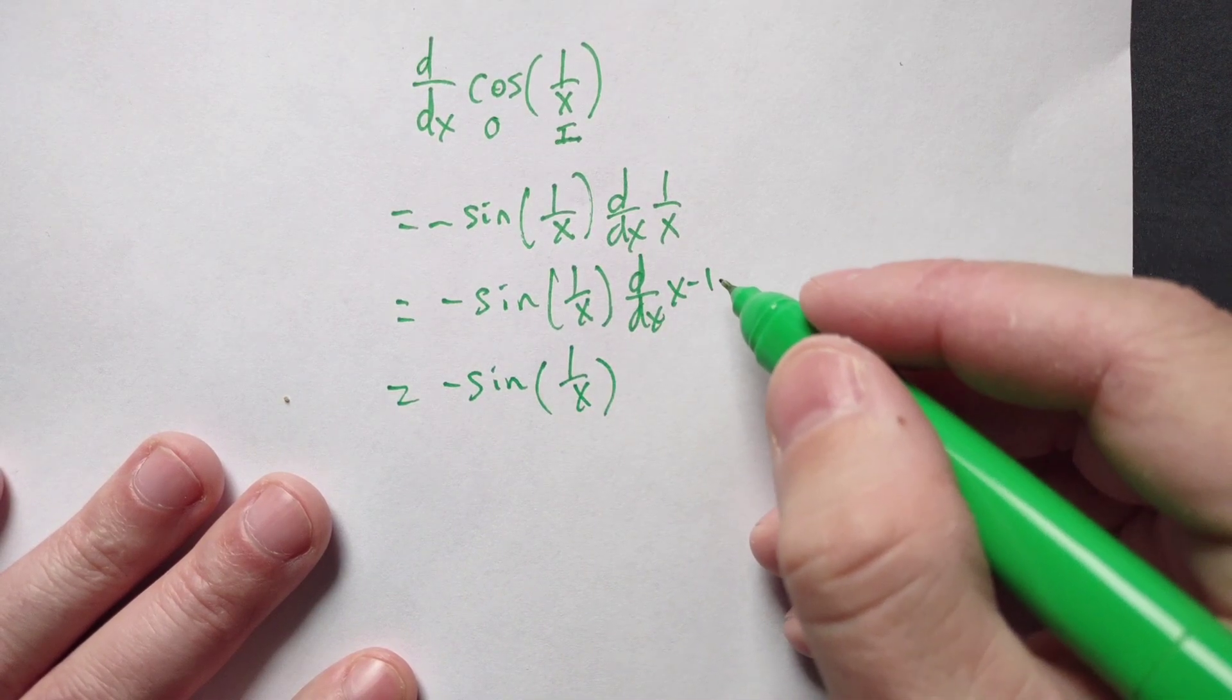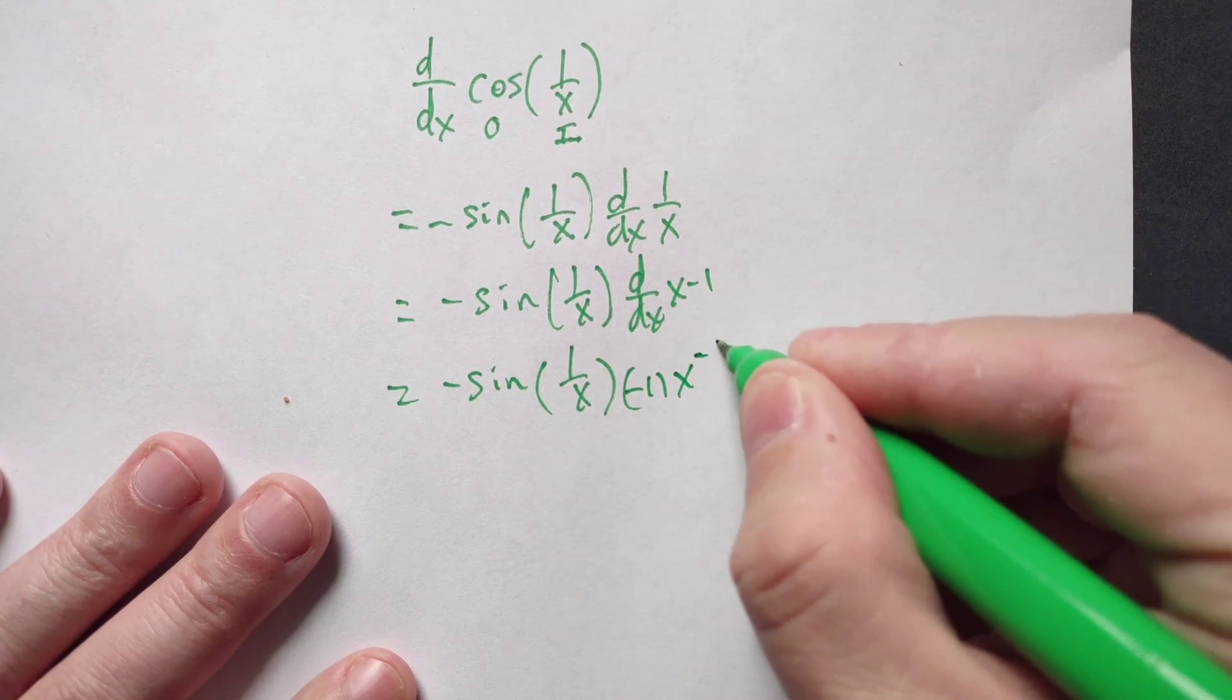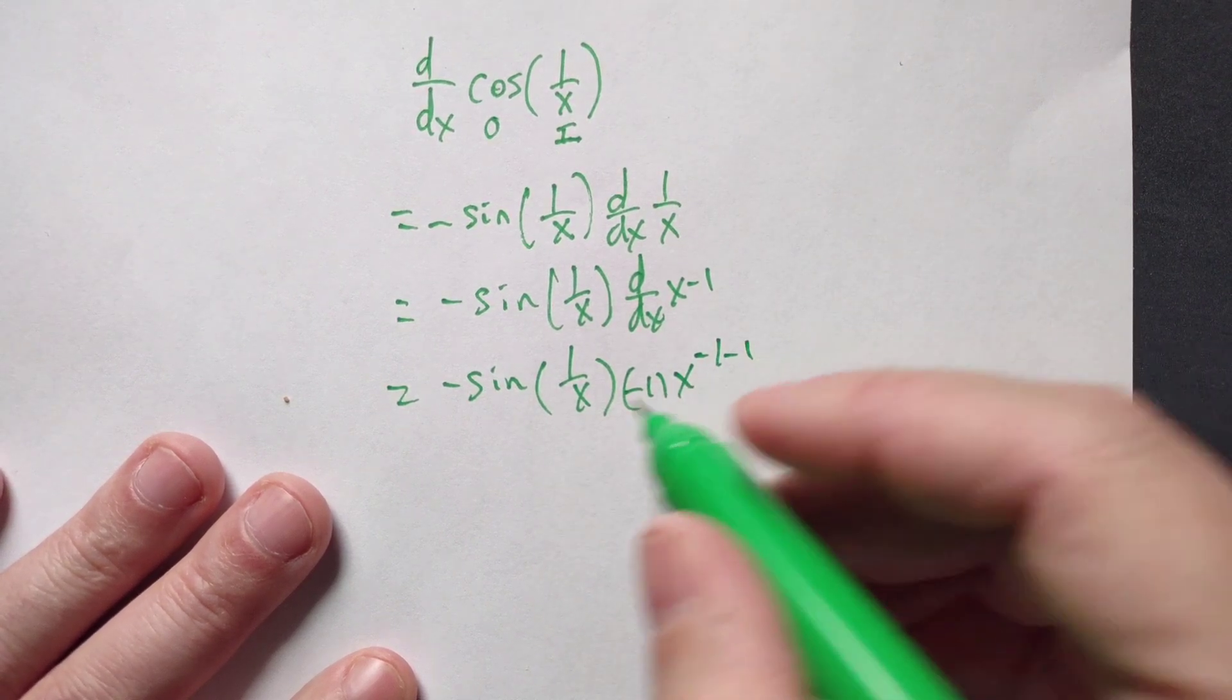Here you can use the power rule on x to the negative first. You bring the negative 1 down, then you form x to the negative 1 minus 1, subtract 1, bring the 1 down.